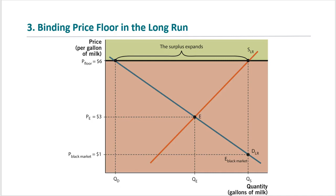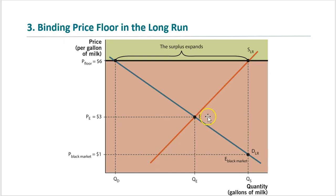Let's look at the effect of a binding price floor in the long run. Without the price floor, equilibrium price PE is $3 and QE is the equilibrium quantity. Since we are considering the long run, the demand and supply curves are more elastic. On the supply side, dairy farms respond in the long run by acquiring more land and expanding production facilities to produce more milk. On the demand side, in the long run consumers will find milk substitutes.